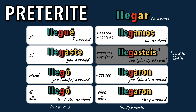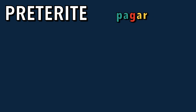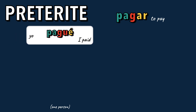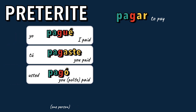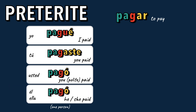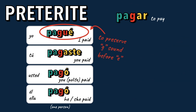Now let's see how the verb pagar will change in the preterite to say different people paid: pagué. Again, notice there's a change in the yo form from G to GU before E to preserve the hard G sound.